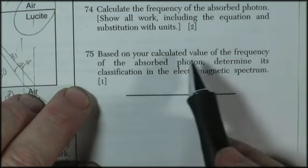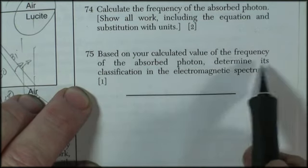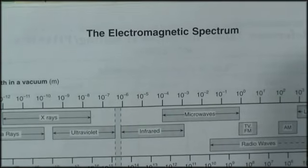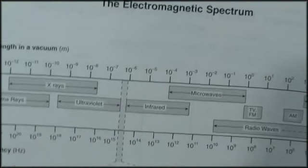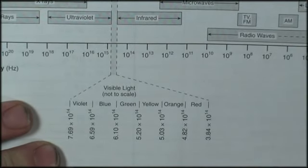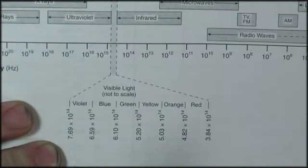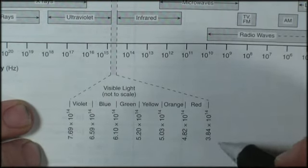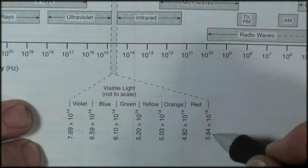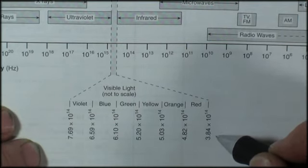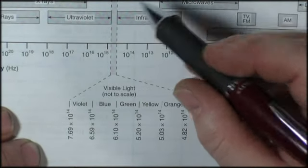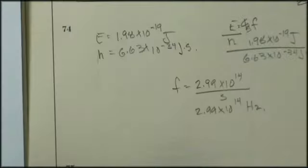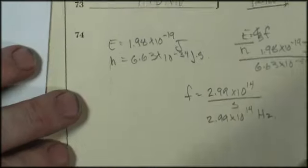And question 75. Based on your calculated value of the frequency of the absorbed photon, determine its classification in the electromagnetic spectrum. And here we go. The electromagnetic spectrum. And let's see. What did we have? About 3 times 10 to the 14. Well, that's 5, 4, 3.8. It's below red. So, we go up to the bigger scale. And here we are in the infrared end of the spectrum. So, we're going to call it infrared.